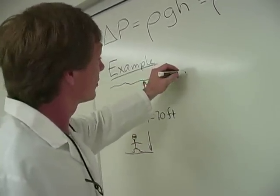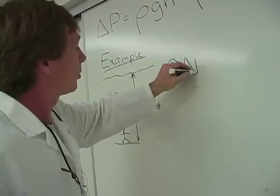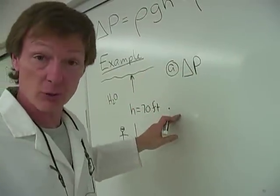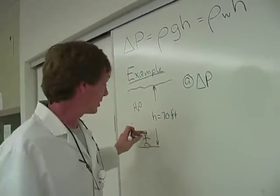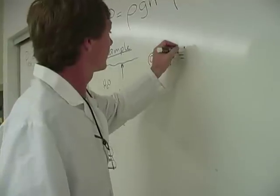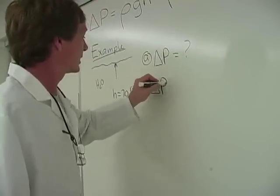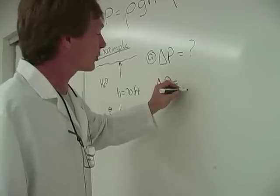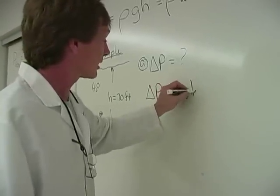And I want to know A. What's the pressure difference, or the gauge pressure, due to the water on top of Geordi? He's 70 feet down. Well, the pressure difference, the gauge pressure, is equal to the weight density of the water times the height.